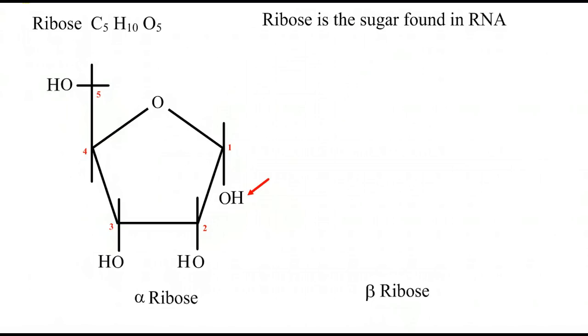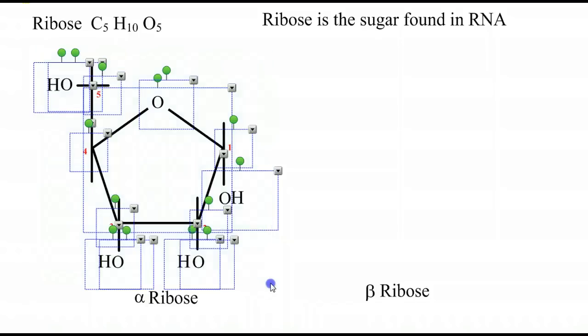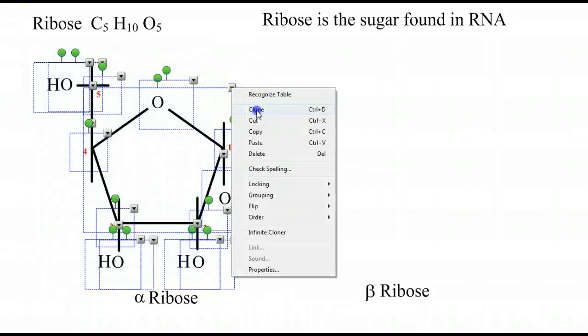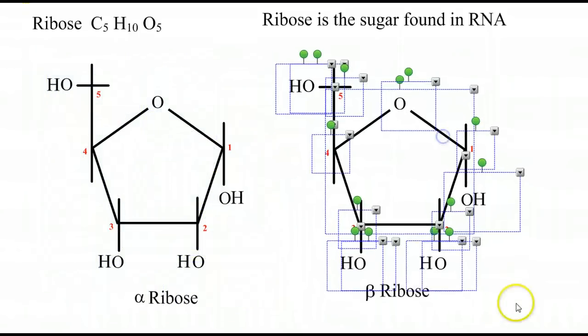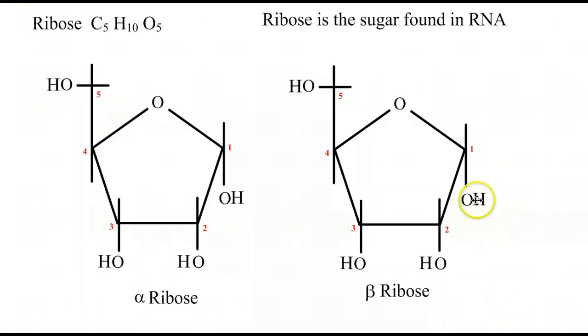We can make beta ribose by simply taking this hydroxyl and putting it in the up position on number one. So really, ribose is quite simple. All the hydroxyls are down except for the one on number five. So here's alpha ribose and beta ribose.